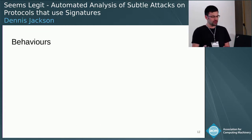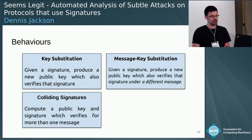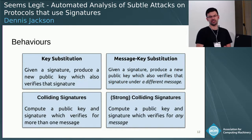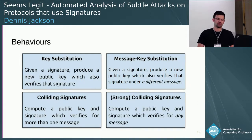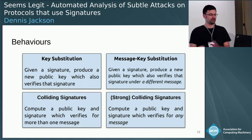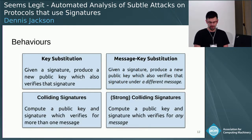So we have these four behaviours: key substitution, message-key substitution, colliding signatures, and a stronger form of colliding signatures. In the paper, we talk about these properties in more detail, and there's a whole family of further notions to do with key substitution. But these are the four properties we're going to look at today.